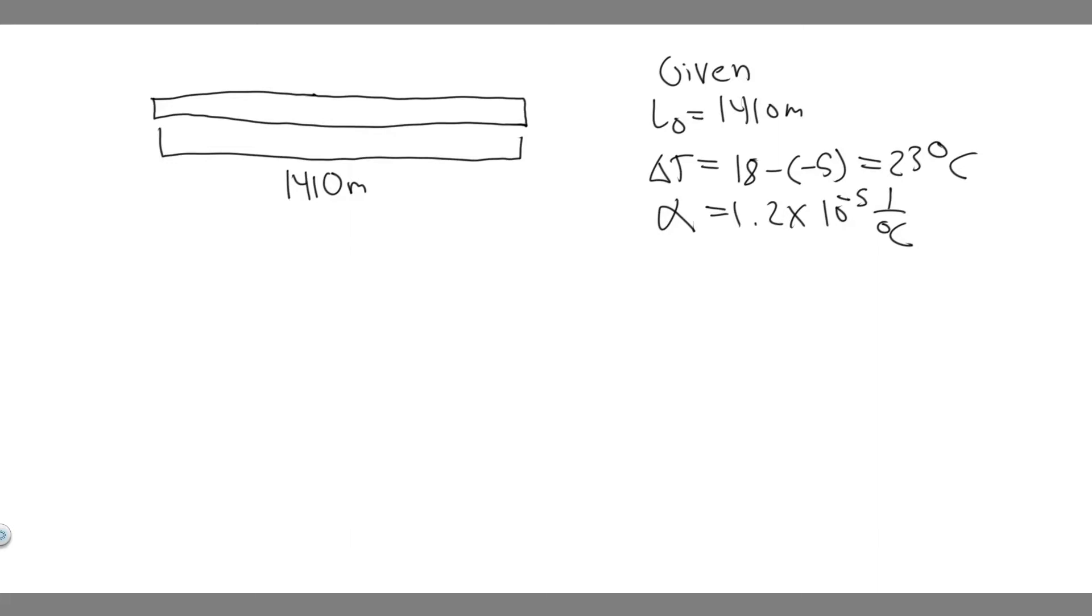In this problem, we're told the Humber Bridge in England has the world's longest single span, 1,410 meters. Calculate the change in length of the steel deck of the span when the temperature increases from minus 5 degrees Celsius to 18 degrees Celsius.